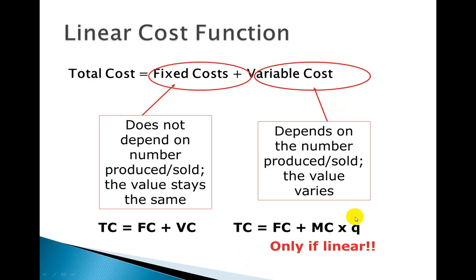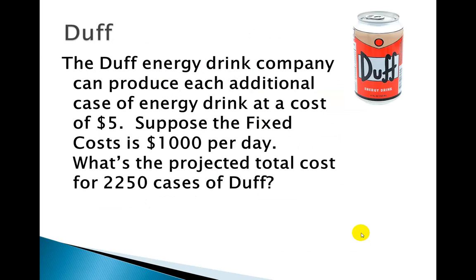And when we're talking linear situations, that variable cost part just turns into marginal cost times Q. Marginal cost is the slope. It's the rate of change. And since it's linear, that's always going to be the same number. So it turns into the equation of a line.